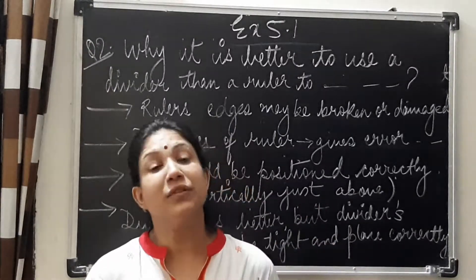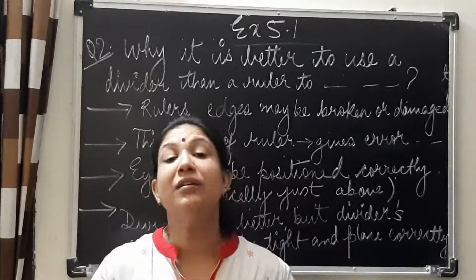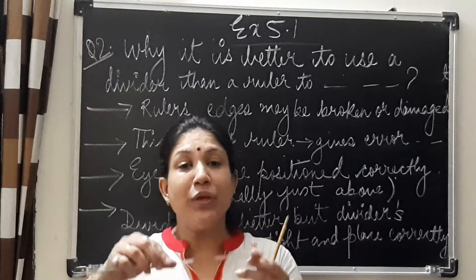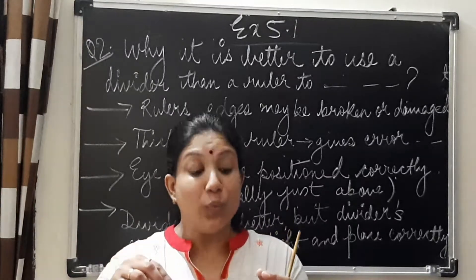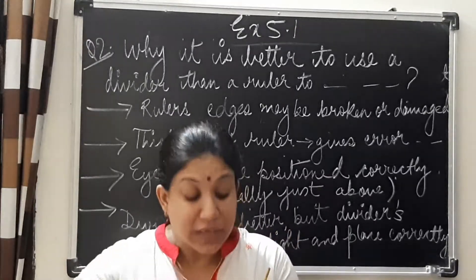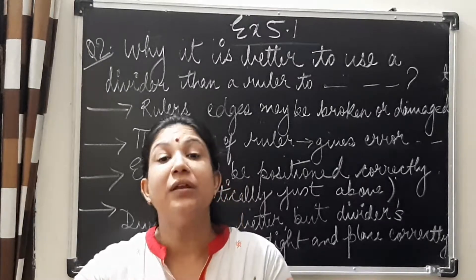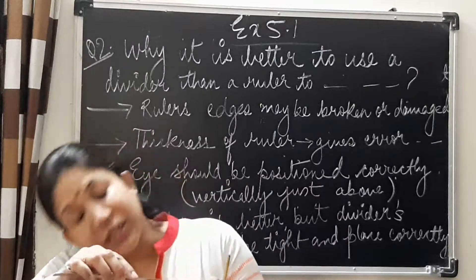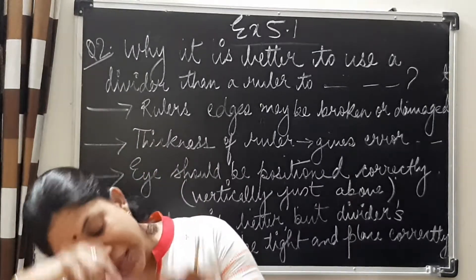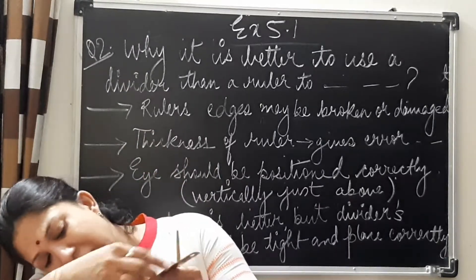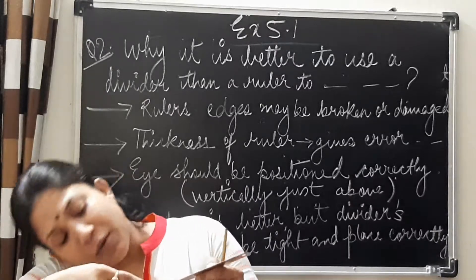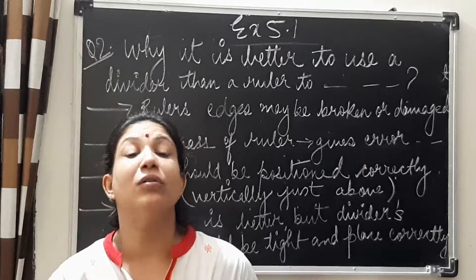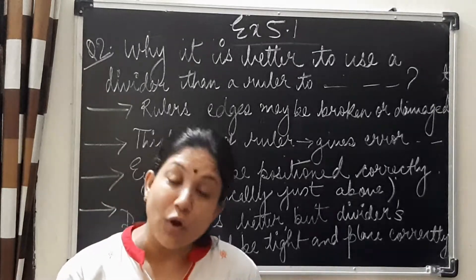The third case is related to the thickness of the ruler and how you position your eyes. When we place the ruler, we should keep our eyes vertically above the scale and carefully read the marks. But sometimes what we do is slide down on the desk, place the scale, and look from an angle. That angular measurement is wrong and will give you the wrong result.